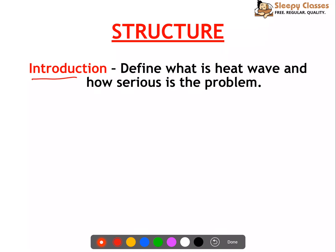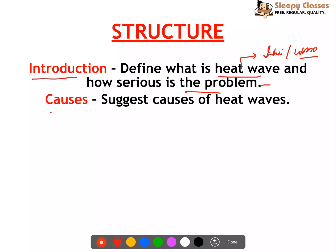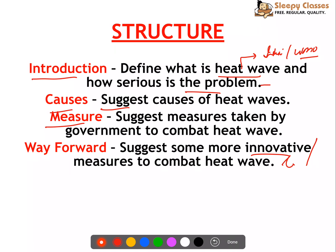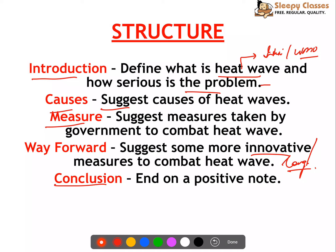First we will define what a heat wave is and how serious this problem is. We've quoted a lot of facts which you can cut down when writing your answer. In the causes section we will cover formation and the things that intensify heat waves. In the measures section we'll cover how to avoid exposure and what measures the government should take, and in the way forward we can suggest innovative or long-term measures to combat heat waves, ending on a positive note.